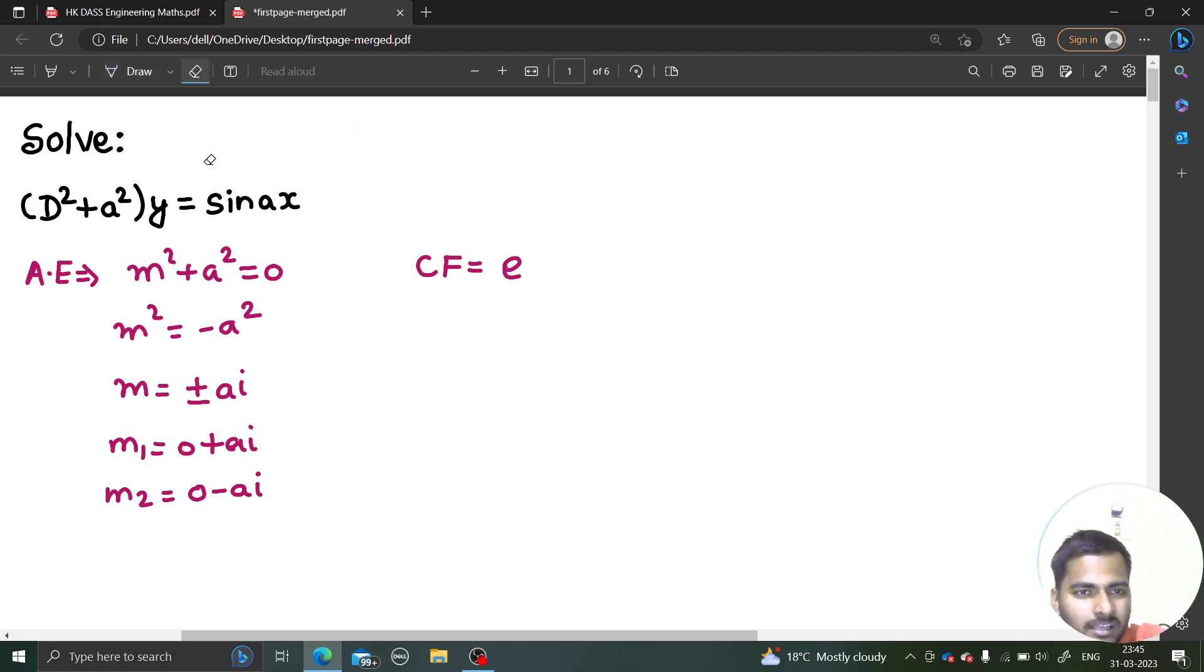Or if you are getting confused at x also, then you can compare it with p plus iota q and p minus iota q. So in each case you are seeing the real part is 0 and the imaginary part is a.